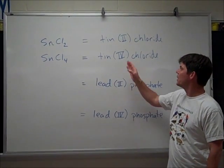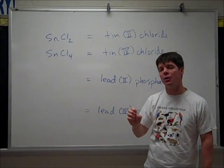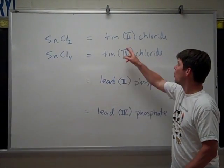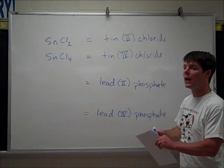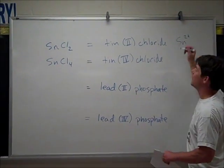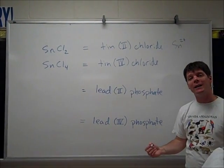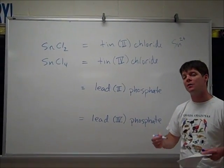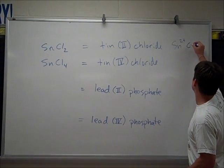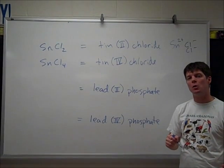Now here's a common problem with this. The Roman numeral does not tell us the number of tins. It's telling us the charge of the tin ion. So when I say Tin(II) chloride, here's what that means. It means it's a tin ion with a plus two charge. And this is why it needs to be paired with two chlorides each with a minus one charge. That's where we're getting that name Tin(II) chloride.